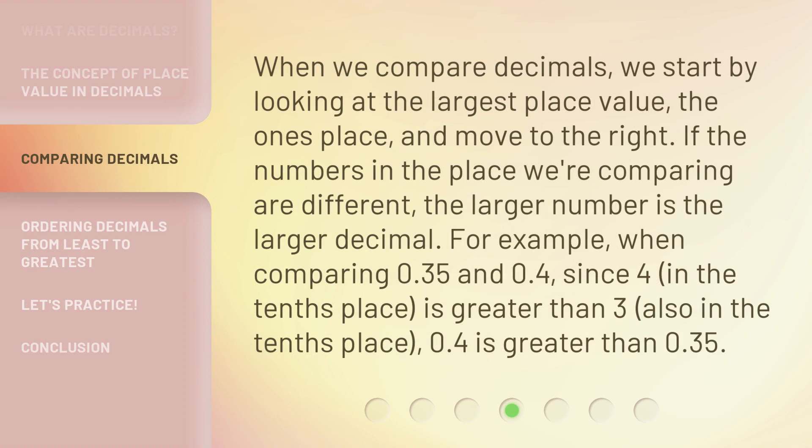When we compare decimals, we start by looking at the largest place value — the ones place — and move to the right. If the numbers in the place we're comparing are different, the larger number is the larger decimal. For example, when comparing 0.35 and 0.4, since 4 in the tenths place is greater than 3 also in the tenths place, 0.4 is greater than 0.35.